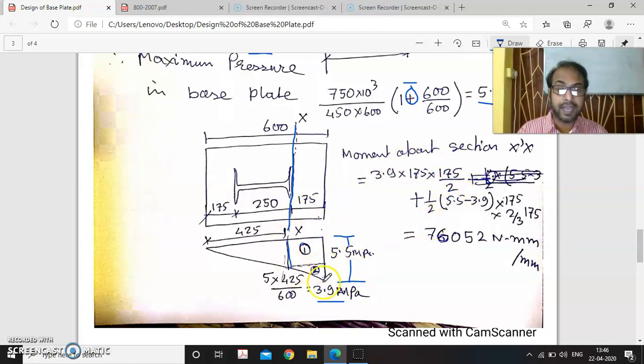Next, this triangular portion is half base into altitude. This portion is calculated as 5.5 minus 3.9 because up to this is 3.9, full is 5.5. So this small portion will be (5.5 - 3.9) × 175 × the CG distance, which is two-thirds from here. So two-thirds of 175. It is coming as 76052 Newton millimeter per millimeter. Why per millimeter? Because we have considered a unit width along this portion. We used to calculate it as a unit length, 1 millimeter. If you considered Newton millimeter, it should be per millimeter.